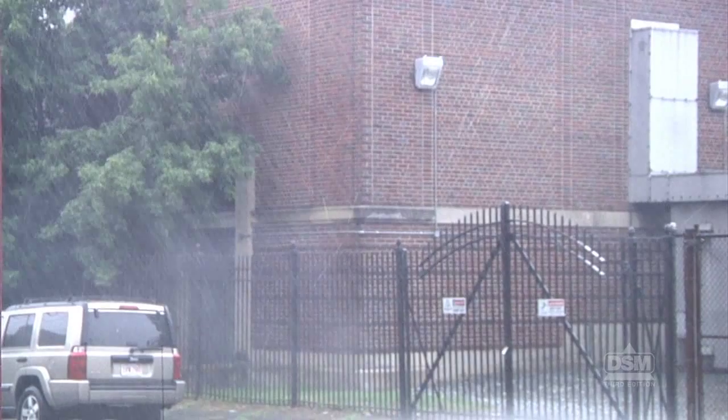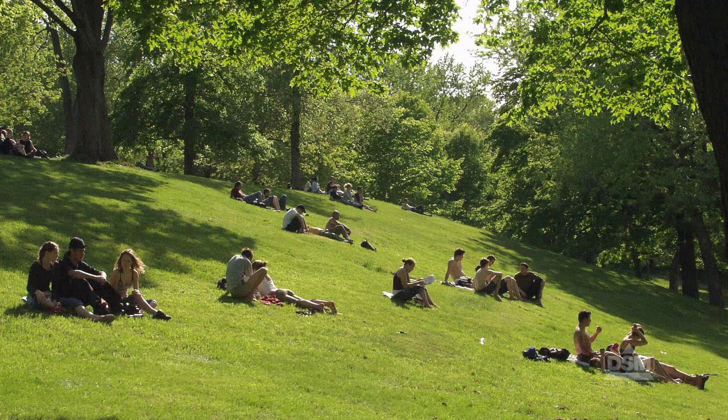Explain that a falling barometer reading and warm temperatures precede stormy weather and probably some sort of precipitation. A rising barometer reading and cooler temperatures indicate fairer weather and probably dry conditions.